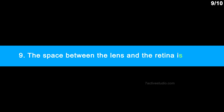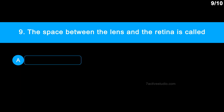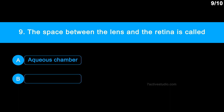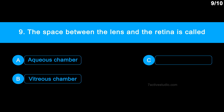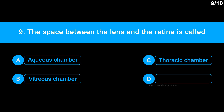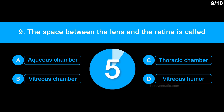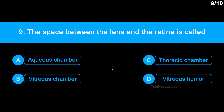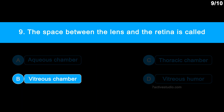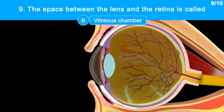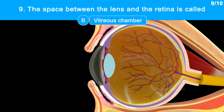Question number 9: The space between the lens and the retina is called... Option A: aqueous chamber. Option B: vitreous chamber. Option C: thoracic chamber. Option D: vitreous humour. The correct answer is option B, vitreous chamber. The vitreous chamber is the area between the lens and the retina, whereas the aqueous chamber is the area between the cornea and the lens.